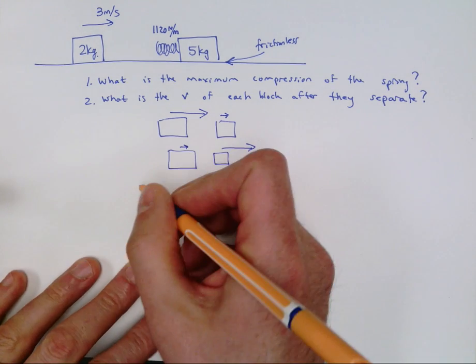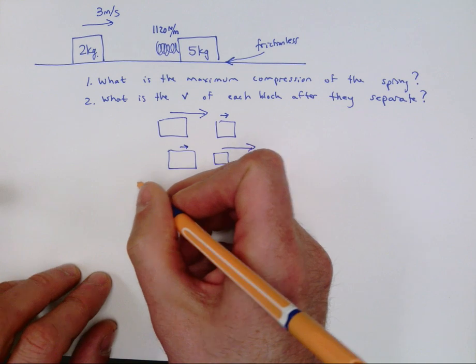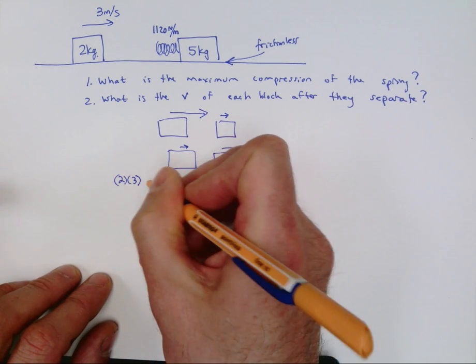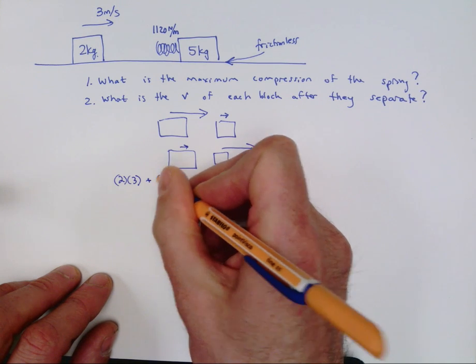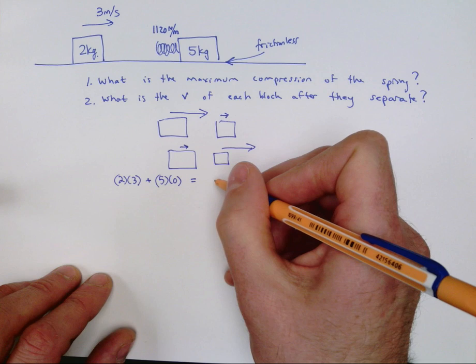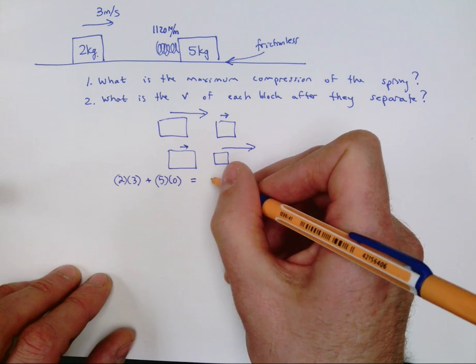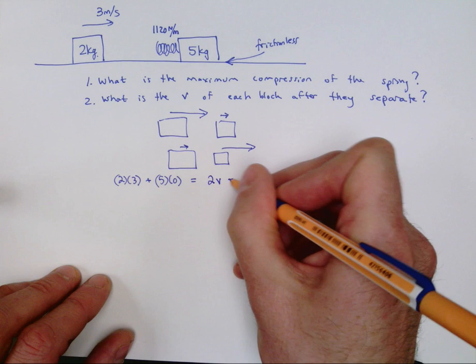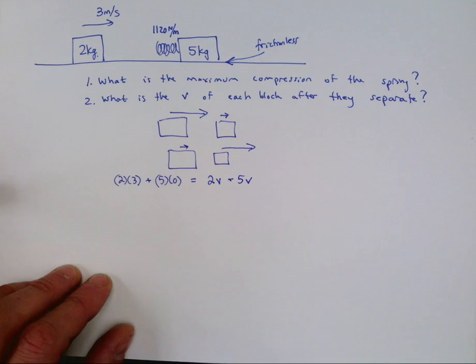We're going to do a momentum problem. So I'm going to look at the momentum before the collision. We have a two kilogram block going three meters per second and we have a five kilogram block at rest. And then after the collision we're looking for that spot when they have the same speed as one another, and so I'm going to have two times that final speed plus five times that exact same final speed.